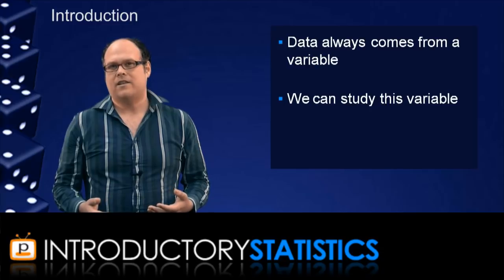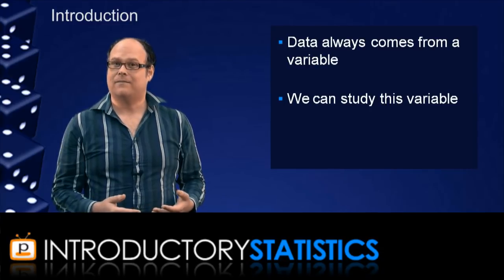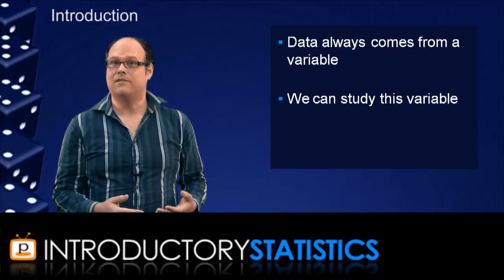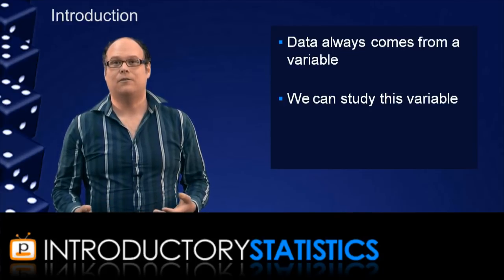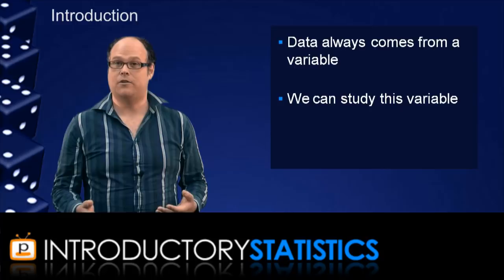In a way, the important difference here is that instead of studying data so that we can say what a variable did do, we're going to study probability to study what a variable can do. That's where probability distributions come in.